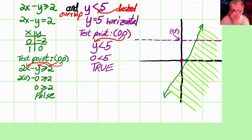So (0,0) gives me a true. I will shade that side in blue.